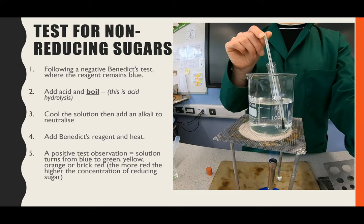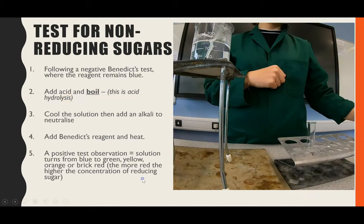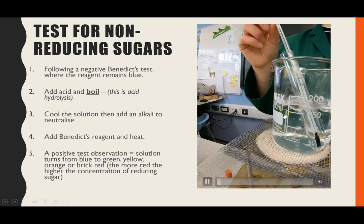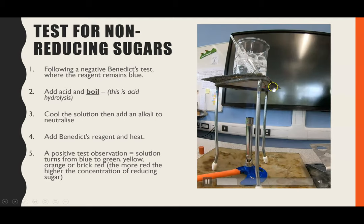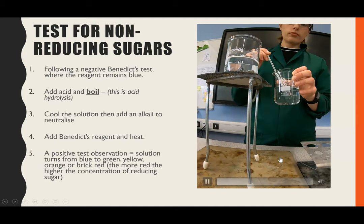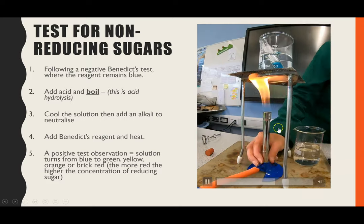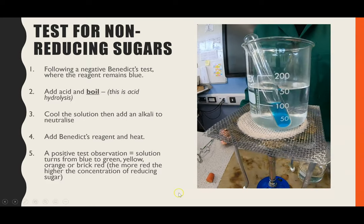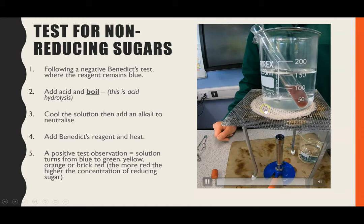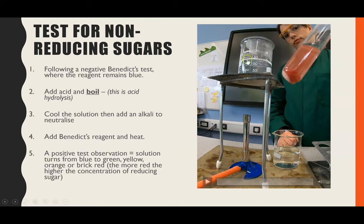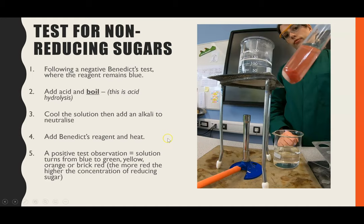The solution must boil for about two minutes for acid hydrolysis to occur. This hydrolyses the glycosidic bonds, converting sucrose into glucose and fructose. After boiling in acid for two minutes, move the tube into cold water for safety, then once it's cool, add an alkali to neutralise. Then add Benedict's reagent and heat again. You'll see the colour start changing at the top, turning red, until the whole solution shows a brick red precipitate — confirming the presence of a reducing sugar.